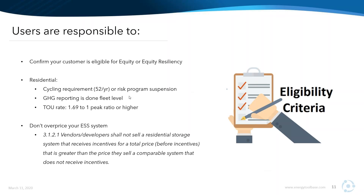One thing I didn't talk about: residential has introduced a cycling requirement of 52 minimum cycles per year. What's interesting is the language in the guidebook does not say if you don't cycle that much, they linearly degrade your incentive. What the language says is they'll suspend you from the program entirely. Also be mindful that on the residential side, GHG reporting is done on a fleet level — so if you've installed 100 energy storage projects residentially, you're doing GHG reporting across all 100. You need to make sure you're hitting those cycle requirements or you may not be able to go out and get SGIP incentives.